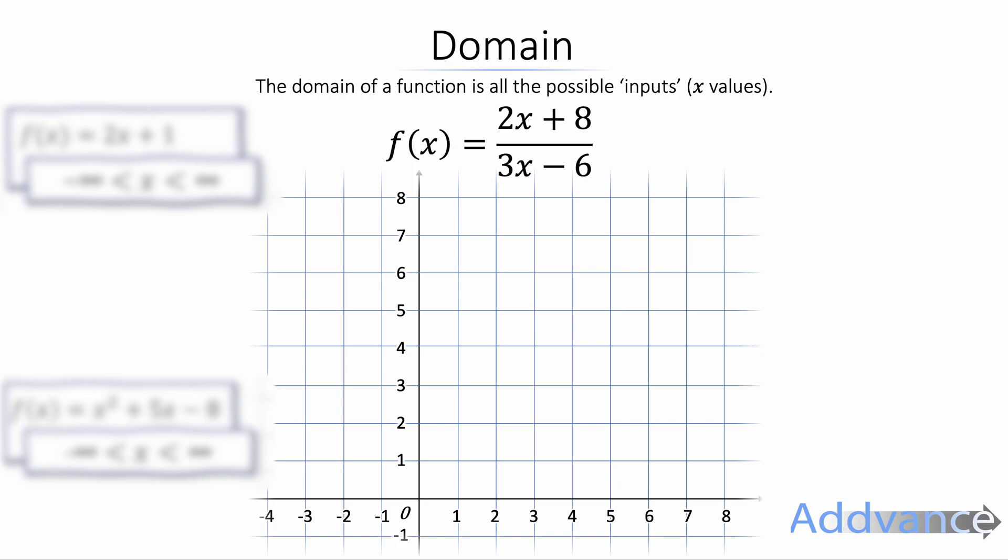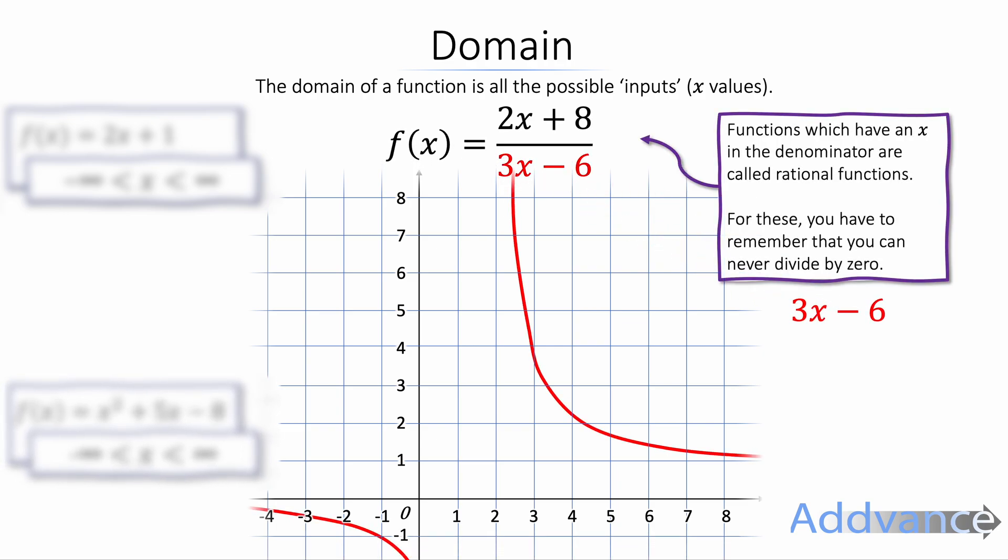Now we've got this function here. This is called a rational function. And for rational functions, these are functions where we've got the denominator is some function of x. Here the denominator is 3x minus 6. The denominator is what we divide by. And you can never divide by 0.